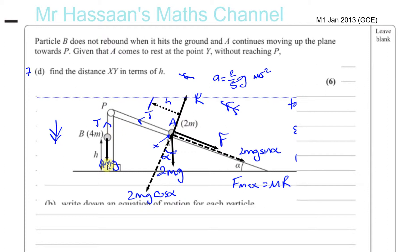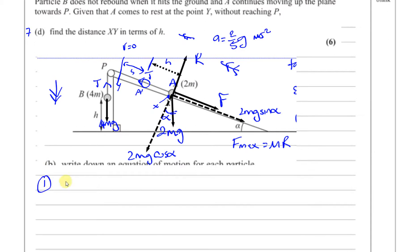The speed that A reaches when it's moved through h is the same speed that B has when it hits the ground. So we need to find that speed. Once B hits the ground there's no tension in the string — it's a new situation for particle A. Its final speed at the point when B hit the ground becomes its initial speed in the new situation, and its final speed will become zero when it stops at point Y.